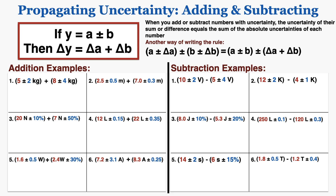I'll go through six addition problems and then six subtraction problems. In problem number one on the left, the uncertainties are already written as absolute uncertainties, so all I need to do is add the two numbers together and then add the two absolute uncertainties together. So 5 plus or minus 2 plus 8 plus or minus 4 is equal to 13 plus or minus 6, keeping the unit in the correct spot. In number 2, we do the same thing — add the two numbers and add their uncertainties together — and the result is 9.5 plus or minus 0.8 meters.